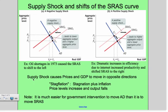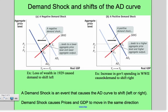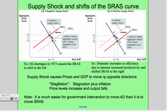Keep in mind that supply shock causes prices and GDP to move in opposite directions. In contrast to demand shocks where they move in the same direction, supply shocks cause them to move in opposite directions.